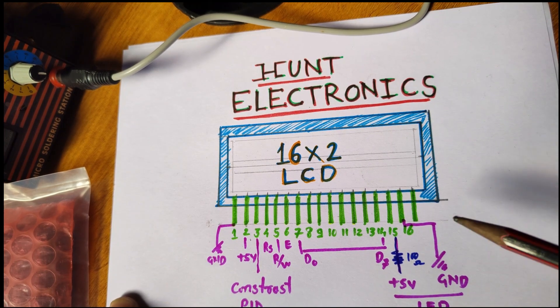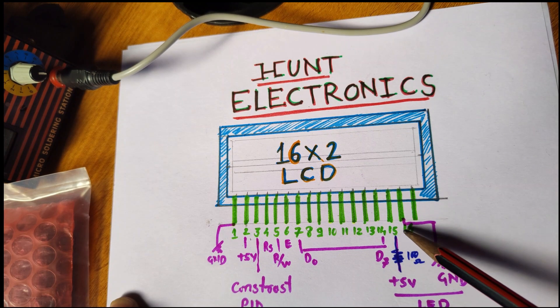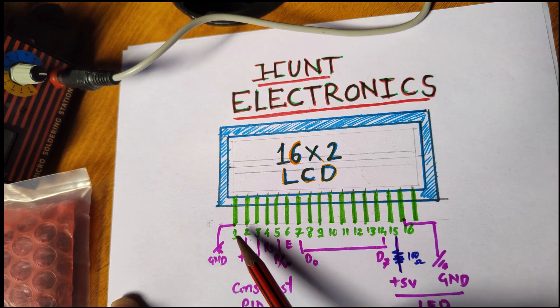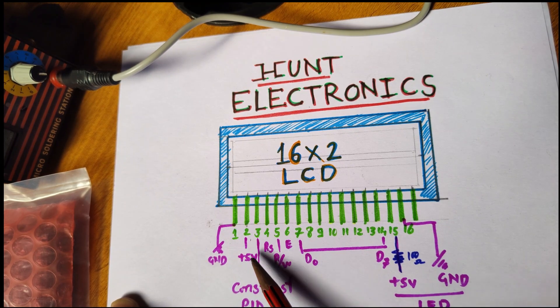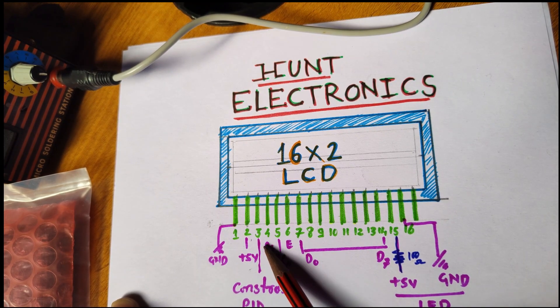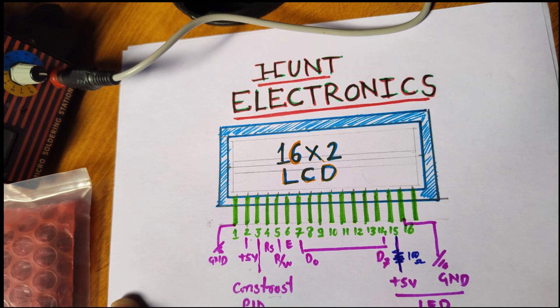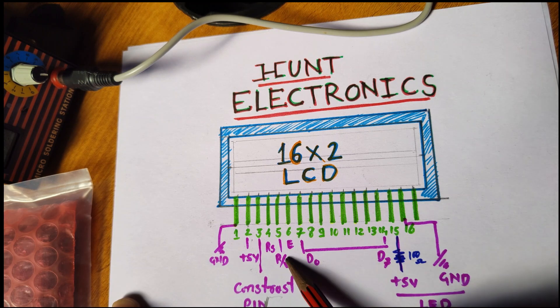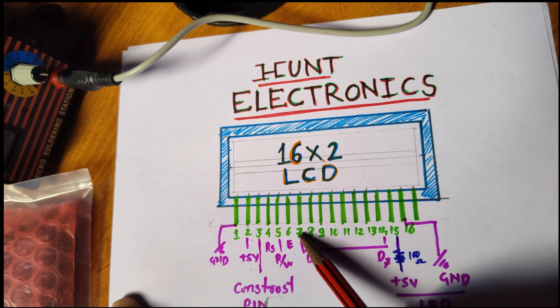It has got 16 different pins. Pin number one is ground, then VCC, pin number three is a contrast pin which can control the contrast, then RS, then read/write, chip enable.